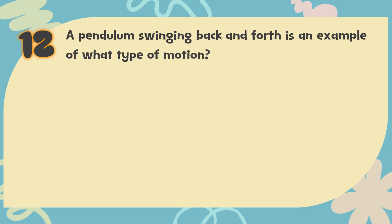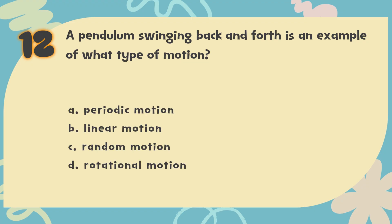Number 12. A pendulum swinging back and forth is an example of what type of motion? The choices are: A. Periodic motion. B. Linear motion. C. Random motion. D. Rotational motion.